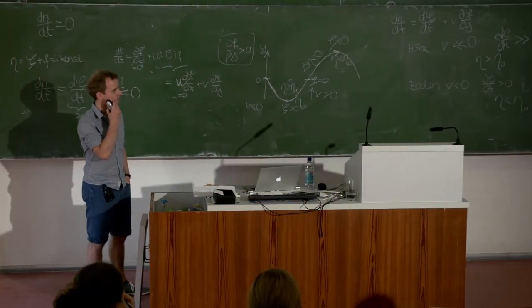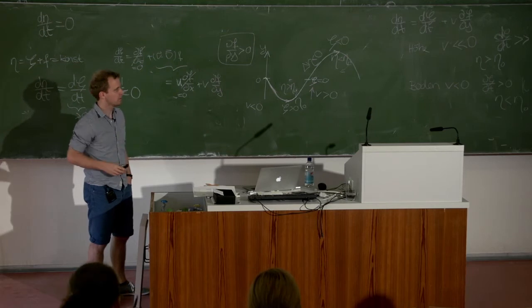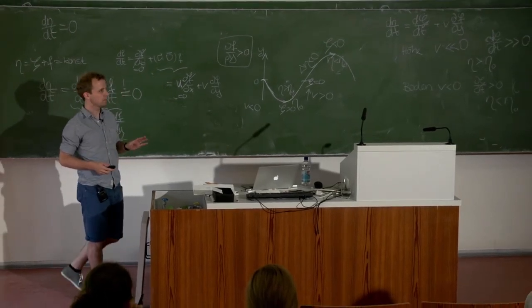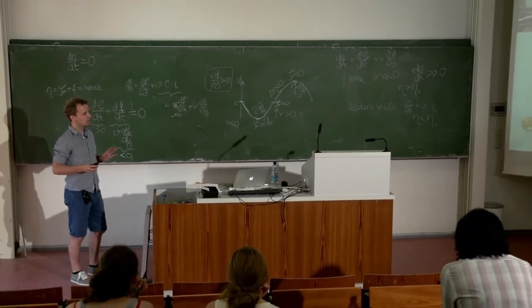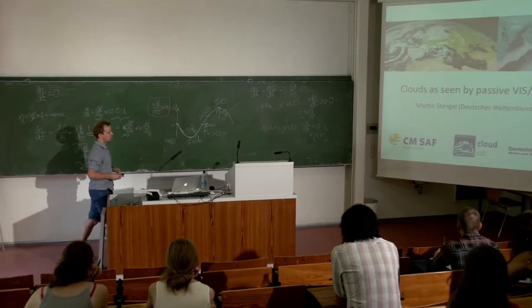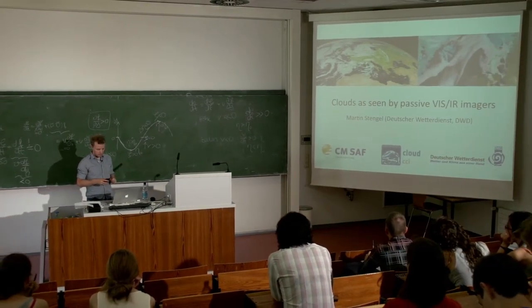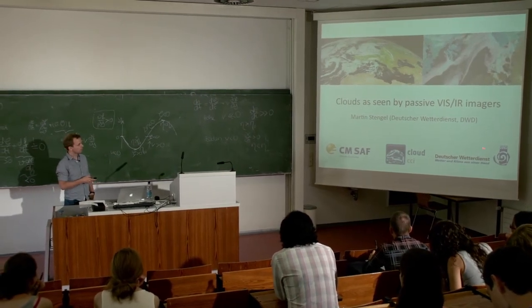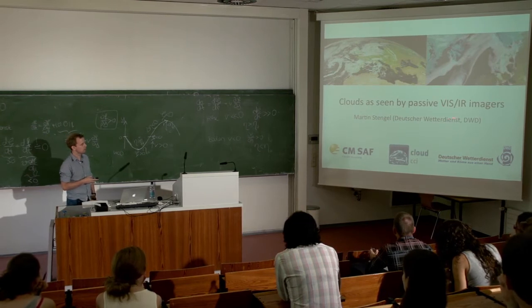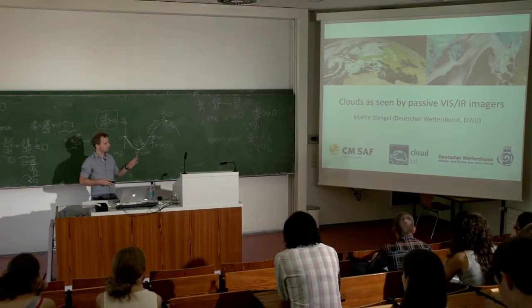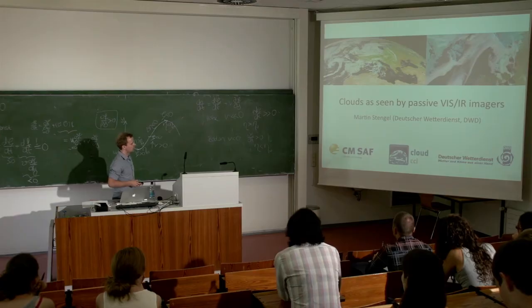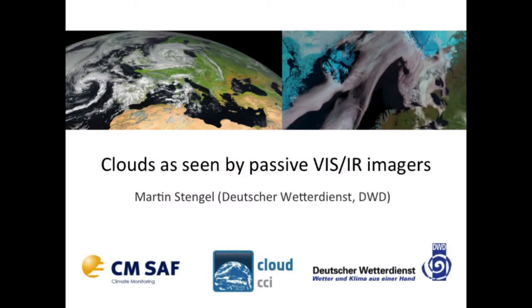My perspective is a little bit different from the other presenters. I'm looking from a climate perspective on clouds as seen by satellites. I won't cover all satellite instruments here, but only the ones called visible and near-infrared imagers — passive instruments — and I'll have a few slides explaining some characteristics of them.